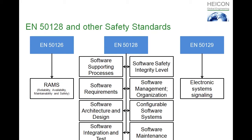Next: software integration and testing, which is a very important part standing on its own. Then the software safety integrity levels, which we will see later in comparison to other standards. The software management organization — functional safety is clearly a combination of many things. It is not only coding software safely; you also need an organization, a process, and a safety culture in your company.